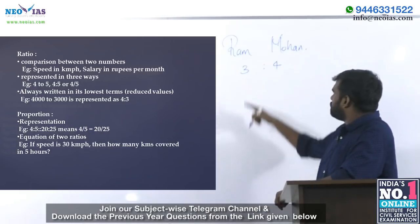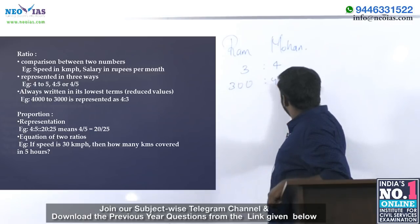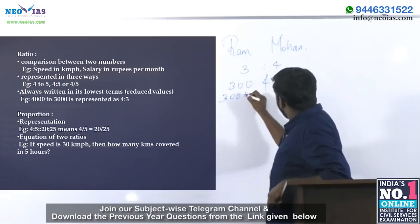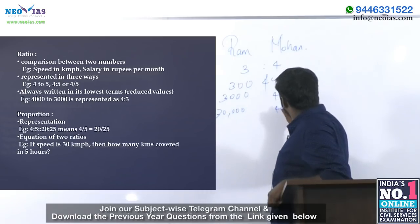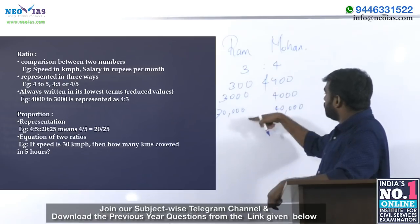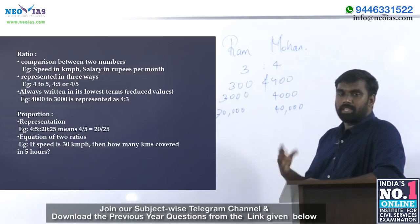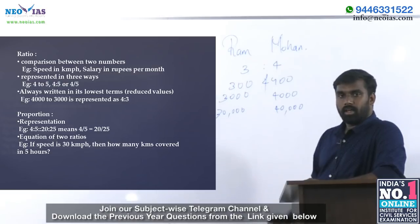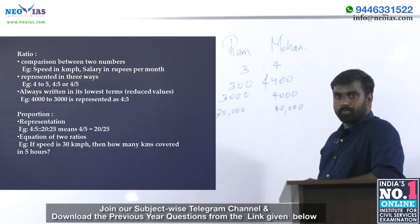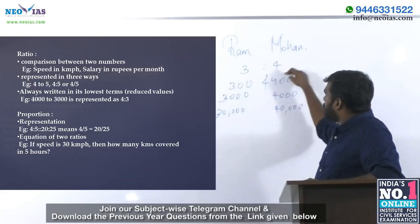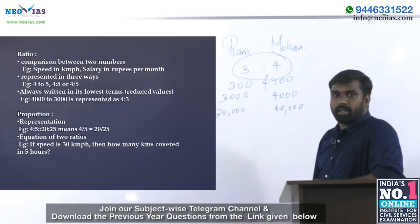Ram's salary is not 3 and Mohan's salary is not 4. It may be 300 and 400, or 3000 and 4000, or 30,000 and 40,000. Ratio is the simplest comparison tool to analyze the connection between two persons or two numbers. Ratio will always be expressed in its simplest terms.